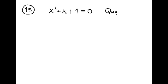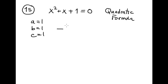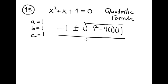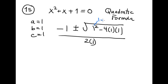Again we use the quadratic formula, but now A is 1, B is 1, and C is 1. The formula gives (−1 ± √(1² − 4·1·1)) / 2. The part inside the radical: 1 squared is 1, minus 4·1·1 is 4, and 1 − 4 = negative 3. So we have (−1 ± √(−3)) / 2.